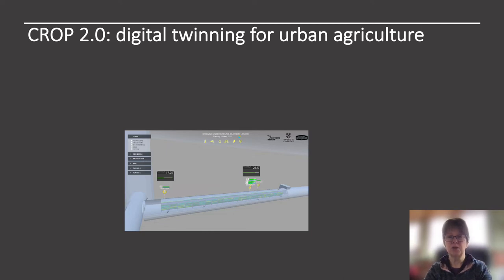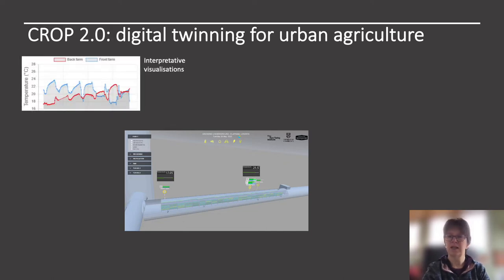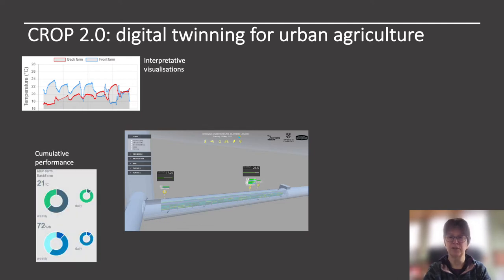The development of CROP 2 has focused on bringing added value to the data. First, we've included interpreted visualisations such as this one, which shows the variation of temperature between the extreme ends of the farm over the previous week. We've also generated graphics illustrating the daily and weekly cumulative performance. These show the number of hours over the previous day and week that the farm environmental conditions have been within specified bands.